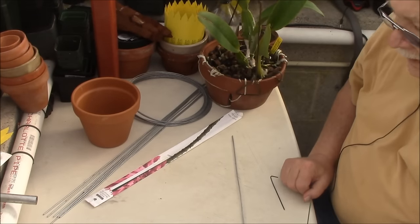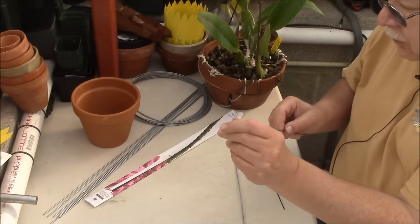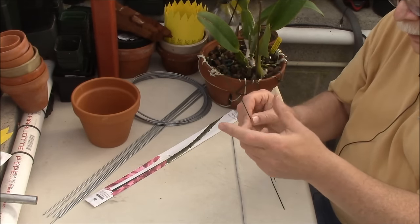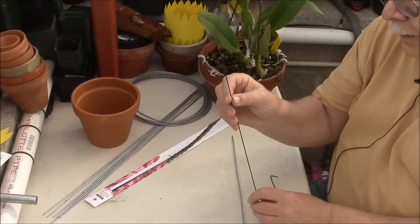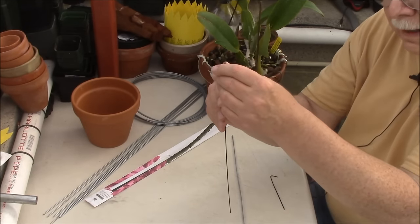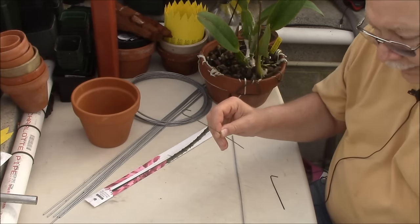Other ways you could do this is without making this, you could just use one of those little spring clips to clip the flower spike onto this and then you can just use a straight piece of wire with it.